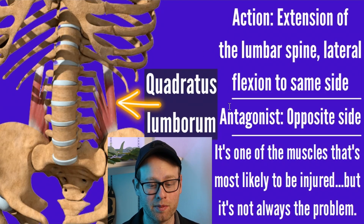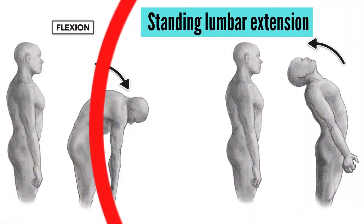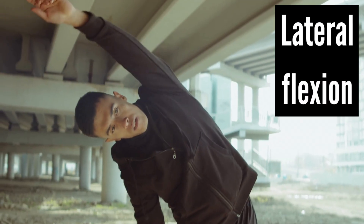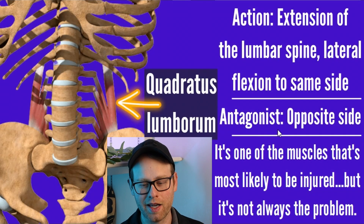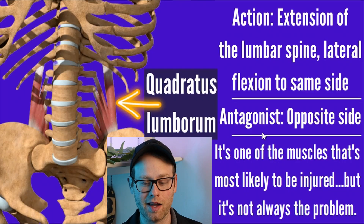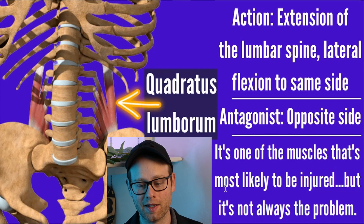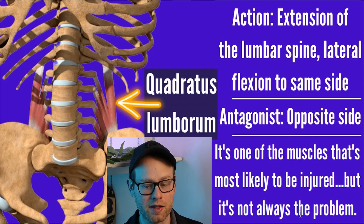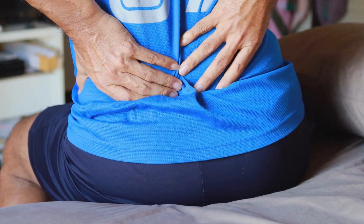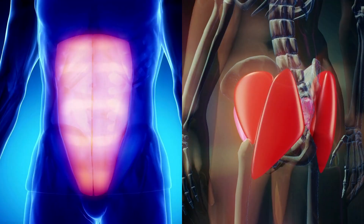Next up, we're talking about the quadratus lumborum, or QL for short. Its actions include extension of the lumbar spine and lateral flexion to the same side. The antagonist depends on what action you're doing; oftentimes the two sides actually oppose each other. The QL is definitely one of those muscles that's likely to be injured or tweaked, but it's not always the problem. Very often the QL is more of a victim — when surrounding muscles like the abdominals or glutes are too weak, the QL ends up paying the price.